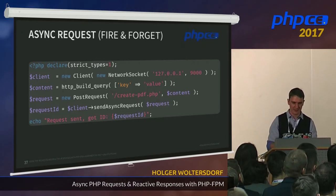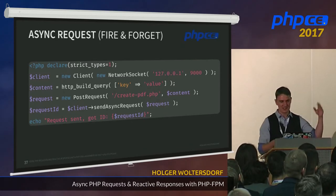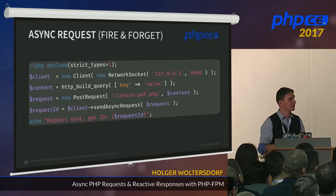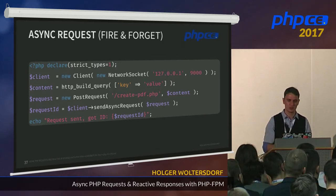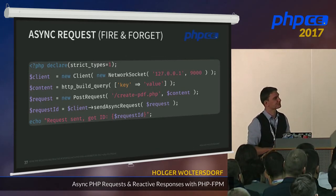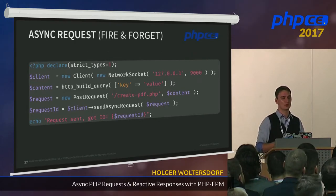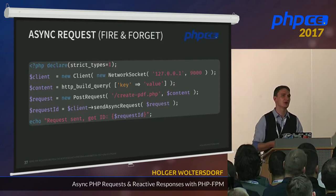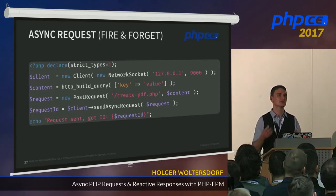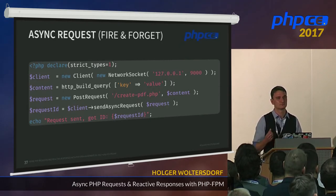We can also send an async fire-and-forget POST request — the same as all the other fire-and-forget examples, except now we just send the request and get a request ID back without handling any response. The request ID is a 16-bit integer, which is a requirement of the FastCGI protocol — every request sent via FastCGI needs a 16-bit integer request ID. The client automatically generates one for you.